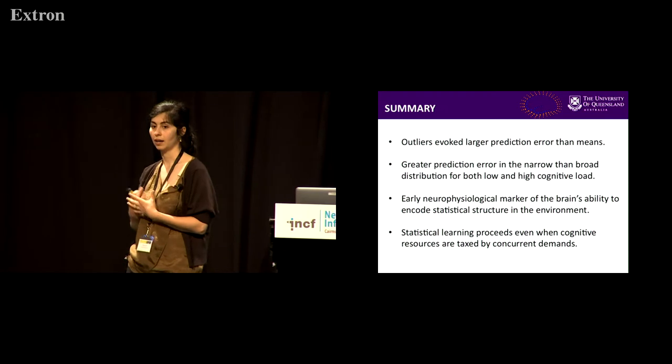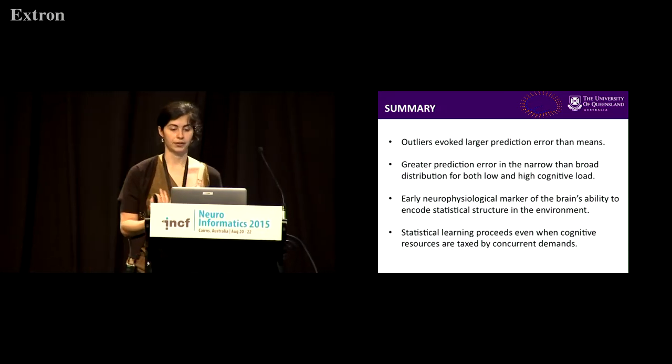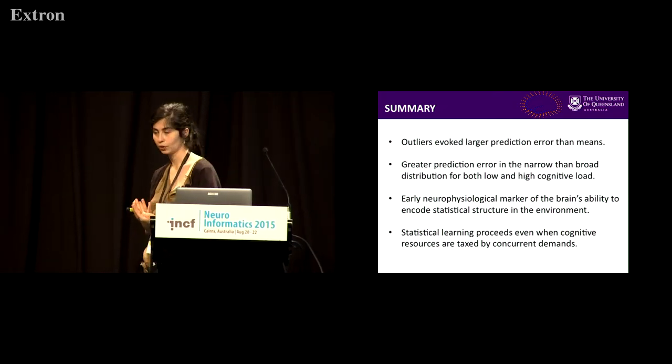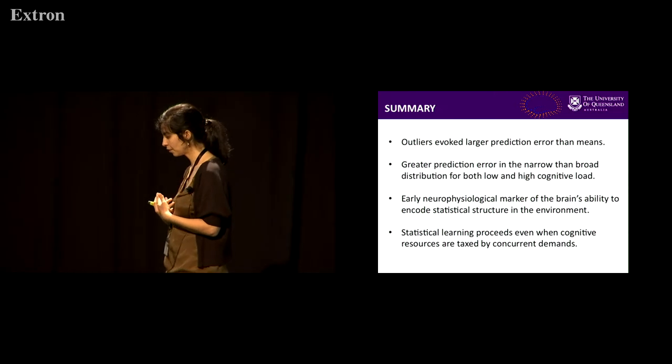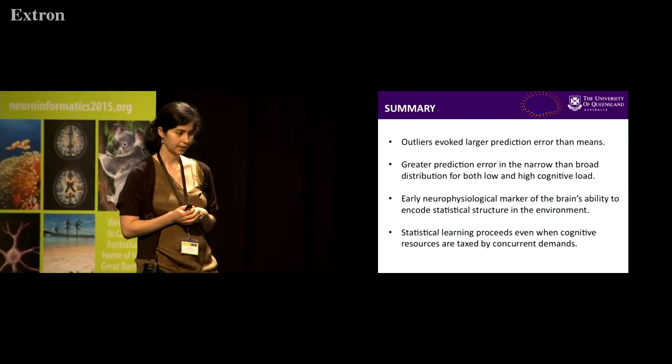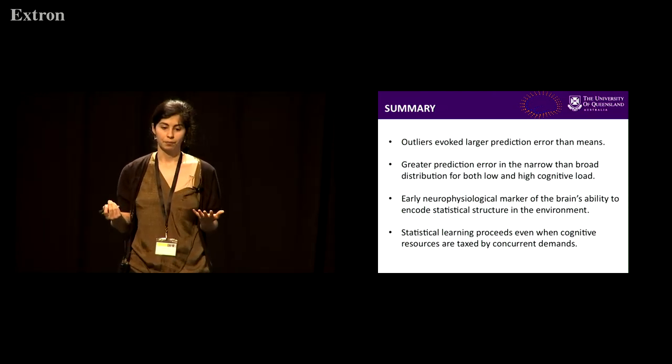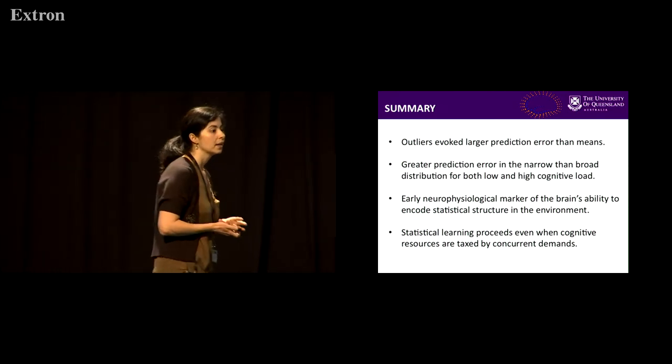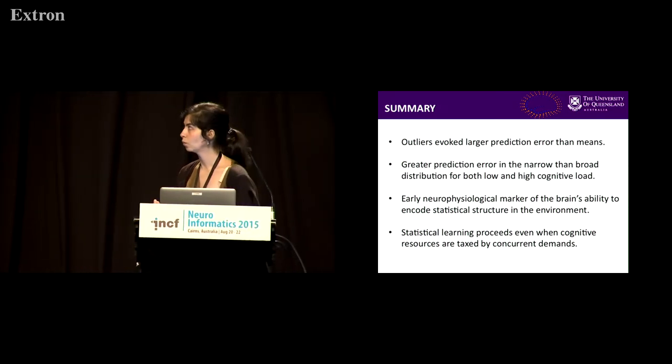I also showed that there is a greater prediction error in the narrow than in the broad distribution. This really might indicate that the brain is sensitive to the likelihood of an event given the context that it is in.